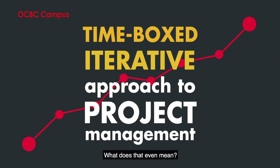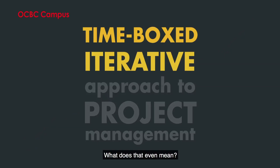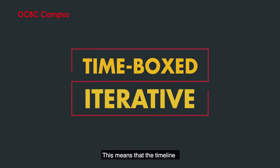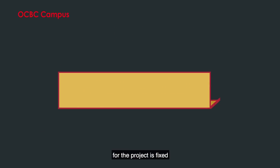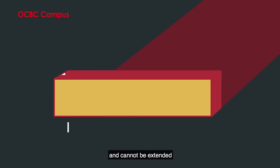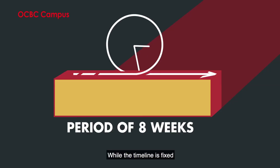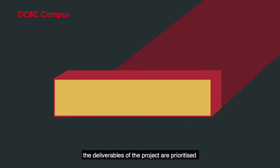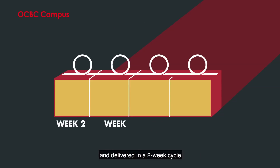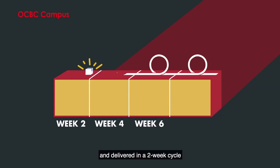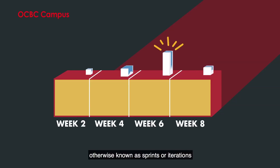What does that even mean? This means that a timeline for the project is fixed and cannot be extended. While the timeline is fixed, the deliverables of the project are prioritized and delivered in a two-week cycle, otherwise known as sprints or iterations.